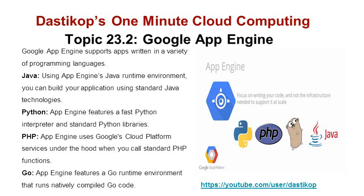In this session we'll be talking about Google App Engine and its support for different languages. Google App Engine is very accommodative and developer friendly. Keeping in view the requirements of developers, it supports a variety of programming languages including Java, Python, PHP, and Go. Using App Engine's Java runtime environment, you can build applications using standard Java technologies.